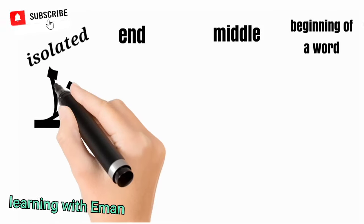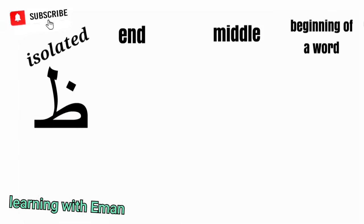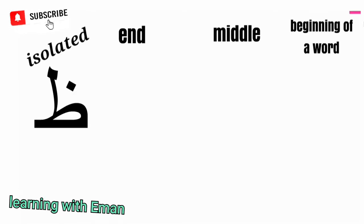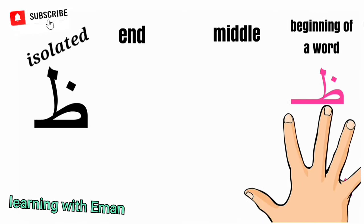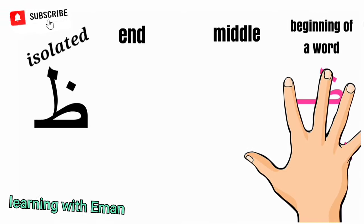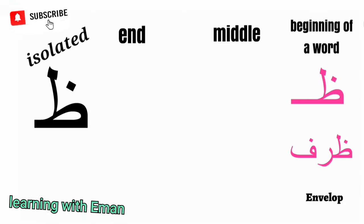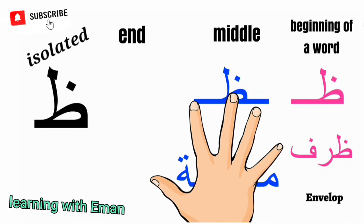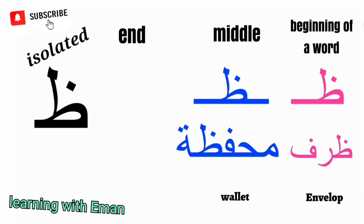Za sounds like the letter Z but it is much, much thicker sounding. At the beginning of a word, like in a word meaning envelope. At the middle of a word, like 'Mahfuza', meaning wallet. At the end of a word, like 'Hal', meaning lock.